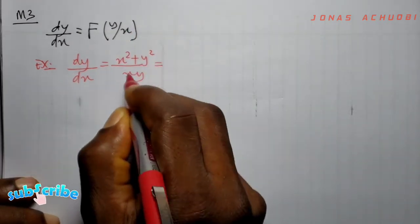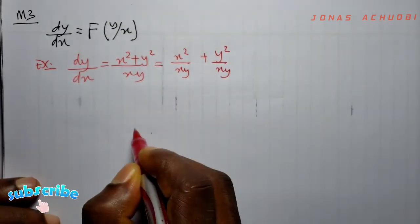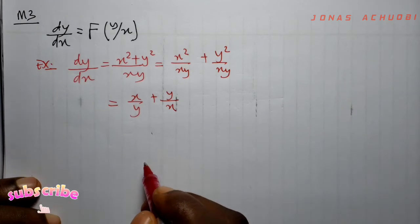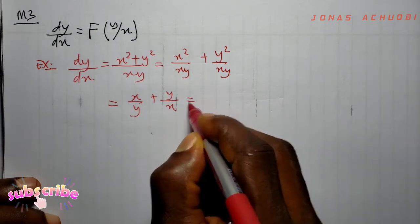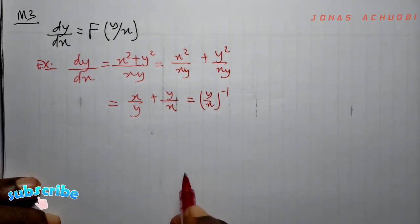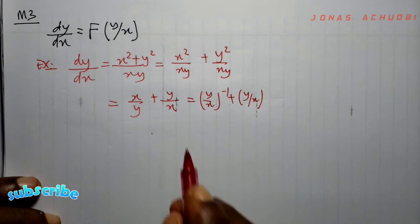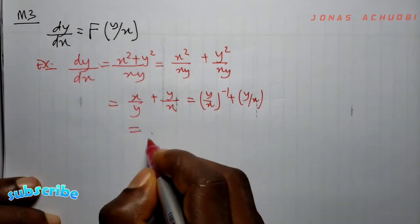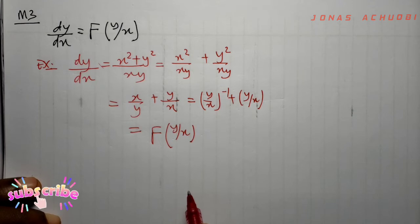We want to see if we can express the right-hand side as some function of y/x. Splitting the fraction gives x²/(xy) + y²/(xy), which simplifies to x/y + y/x. The second term is already in the form y/x, and the first term x/y can be written as (y/x)⁻¹. So we have expressed the right-hand side entirely as a function of y/x, and we conclude this first-order ODE is homogeneous.